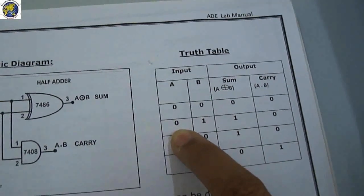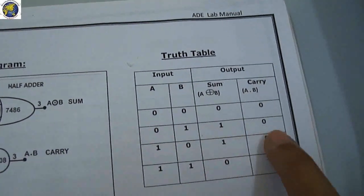The third condition is A is 1, B is 0. For inputs 1, 0 you will get sum 1, carry 0.